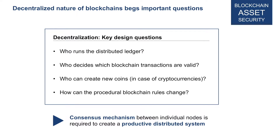The answer is consensus. There needs to be something called a consensus mechanism that facilitates agreement between individual nodes — a system of rules that decides who is right and what happens when someone wants to do something in the network. This is required to get a productive distributed system, because in a large distributed system it will rarely be the case that everyone agrees on everything. A consensus mechanism is the way to resolve disputes.